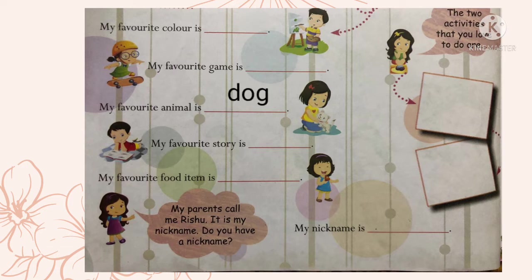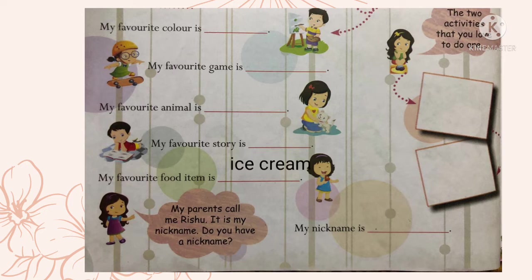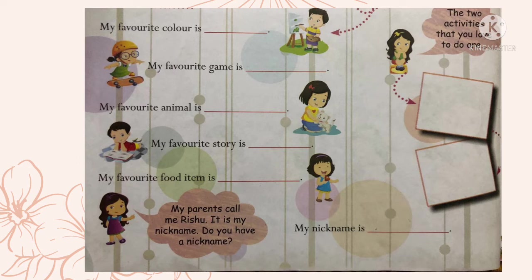My favorite animal is dash — yahan pe aapka favorite animal ka naam likhna hai. Riya ka tha dog. In the next one write your favorite story's name — kaunsi story aapko zyada pasand hai uska naam likho. I'll be writing here 'The Lion King.' My favorite food item is dash — aapko jo sabse zyada khaane mein pasand hai vo likhna hai. Riya ko ice cream pasand thi. Now look at the pink cloud: 'My parents called me Rishu — it is my nickname.' Do your parents call you with a nickname? Then write it in this box. In the corner two white boxes, write the two activities you like to do the most — I'll be writing 'playing' and 'reading.'